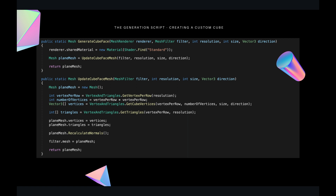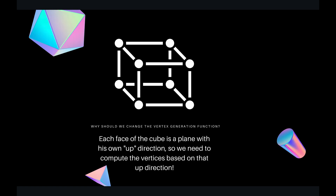But what is the main difference from the plane generator script? The main difference is that we need to change the vertex generation function. Why? Because each face of the cube is a plane with its own up direction. That means that we need to compute the vertices based on that particular up direction, as we can see here.